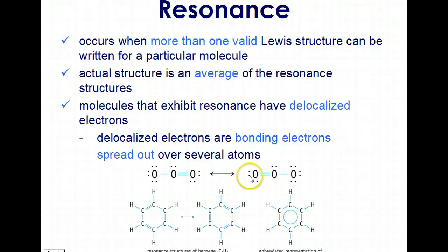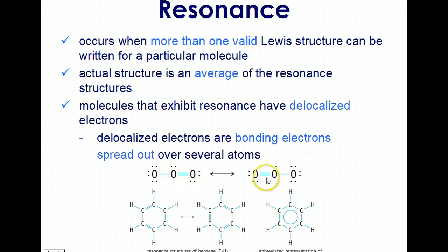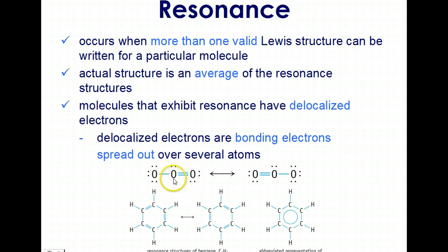For example, in ozone, the double bond is going back and forth between the oxygen atoms on the right and the oxygen atom on the left. So it's basically about one and a half bonds being shared between each of the outer oxygen atoms and the central oxygen.